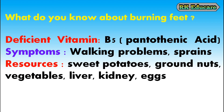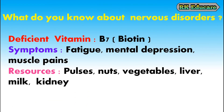Sweet potatoes, groundnuts, vegetables, liver, kidney and eggs are resources of vitamin B5 or pantothenic acid. What do you know about Nervous Disorders? Nervous disorders are due to deficiency of vitamin B7, also called biotin. Fatigue, mental depression and muscle pains are the symptoms of nervous disorders. Pulses, nuts, vegetables, liver, milk and kidney are the resources of vitamin B7 or biotin.